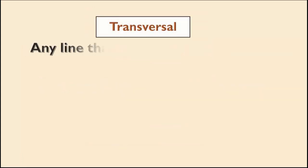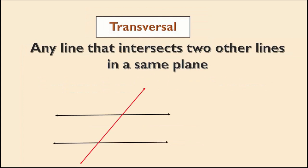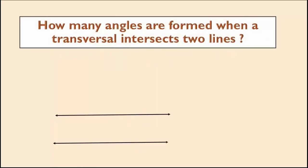A line is said to be a transversal if it intersects two or more lines at distinct points. Here, EF is the transversal that intersects AB and CD at G and H respectively. Four angles are formed around each intersecting point when a transversal intersects two lines.